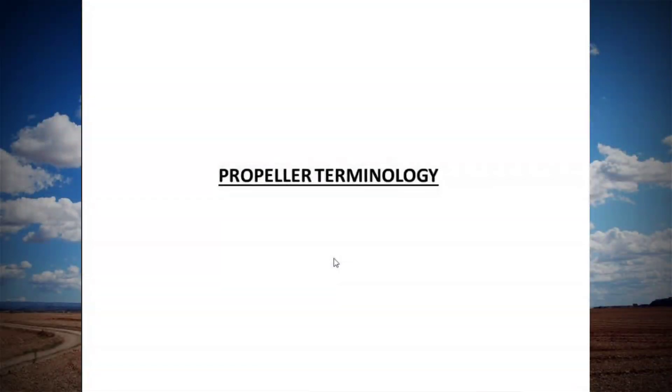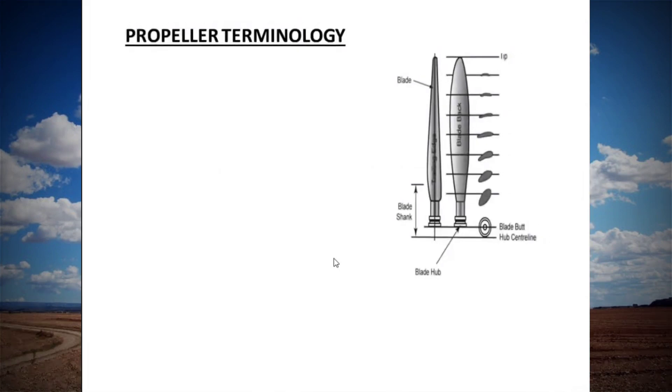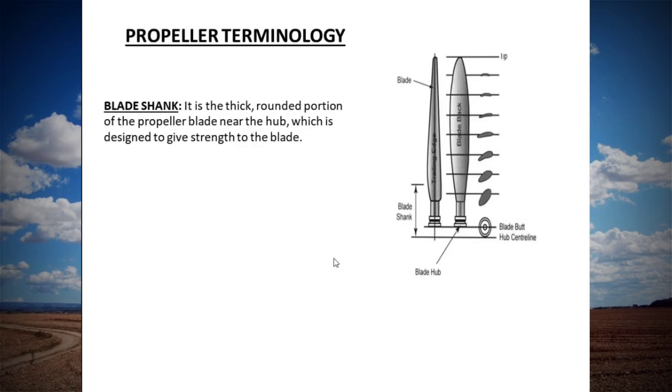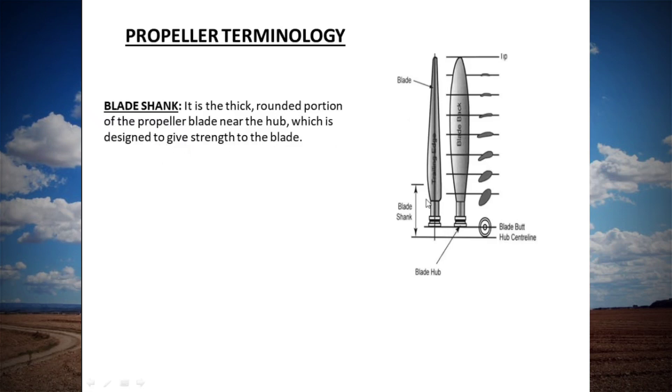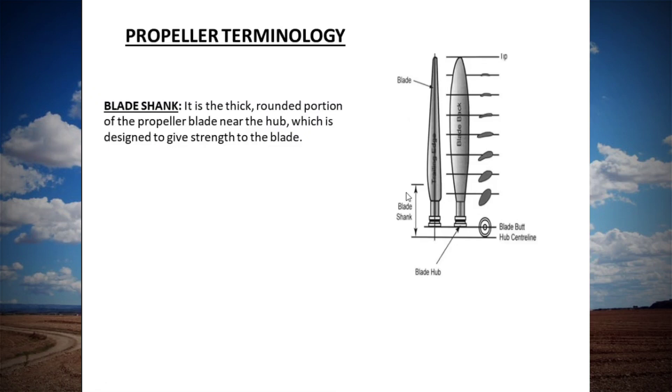Let's discuss some propeller terminologies. Blade shank: the blade shank is a thick rounded portion of the propeller blade near the hub which is designed to give the strength of the blade. Why we give the rounded shank? This is actually a designing factor which protects it to be broken during the high rotation. So we provide additional designing feature which provides its strength.